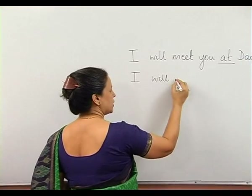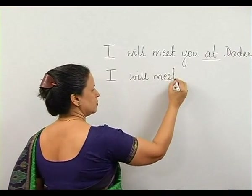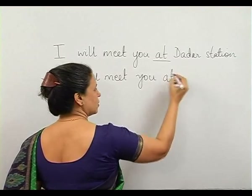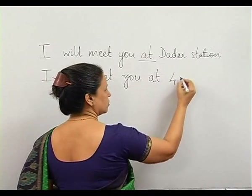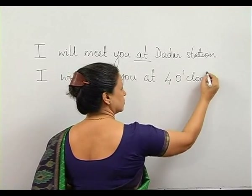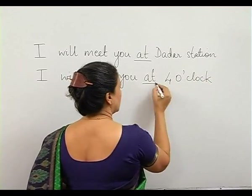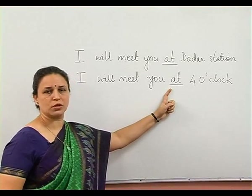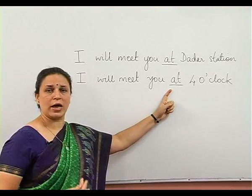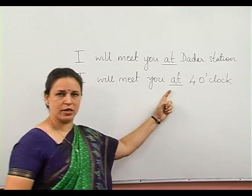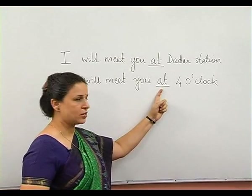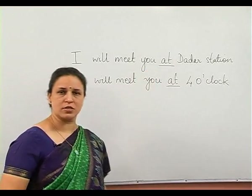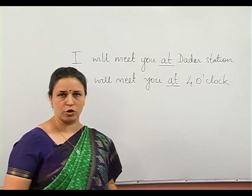But suppose I say: 'I will meet you at 4 o'clock.' Now, the same preposition 'at' over here shows you the time. When we say at 4 o'clock, at 6:30, at midnight, then we use 'at' to denote time, while the earlier example denotes place. So you can see the same preposition can be used for both.